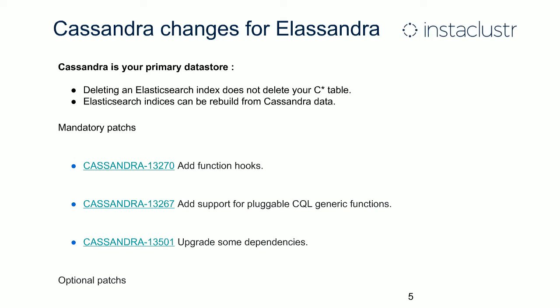It's very important to understand that Cassandra is considered the primary data store in the Elassandra philosophy. In this perspective, removing an Elassandra index won't remove your Cassandra data, but only the Elasticsearch indices. You will always be able to rebuild an Elasticsearch index from your source of truth — your Cassandra tables. Elassandra is built on a very robust Cassandra version.